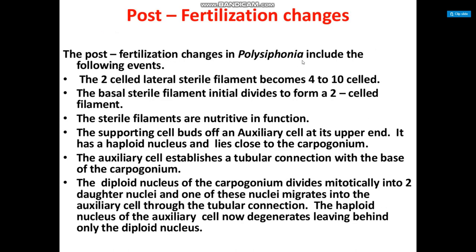Post-fertilization changes in Polysiphonia include the following events: the two-cell lateral sterile filament becomes four to ten cells; the basal sterile filament initial divides to form a two-cell filament. The sterile filaments are nutritive in function. The supporting cell produces an auxiliary cell on its upper side; it has a haploid nucleus and lies close to the carpogonium. The auxiliary cell establishes a tubular connection with the base of the carpogonium.